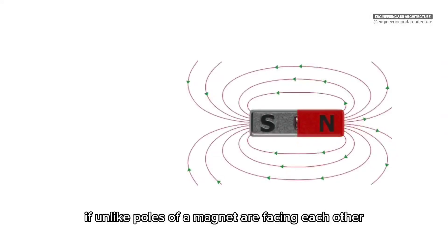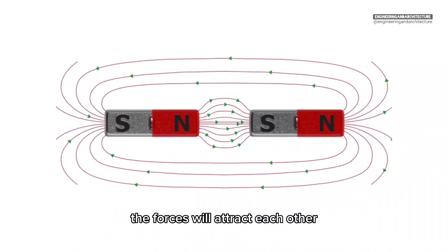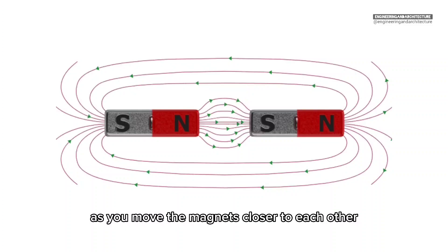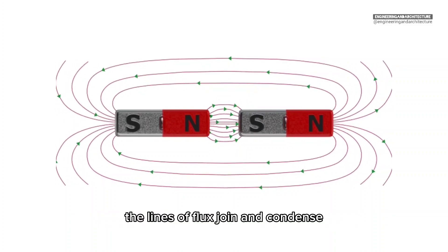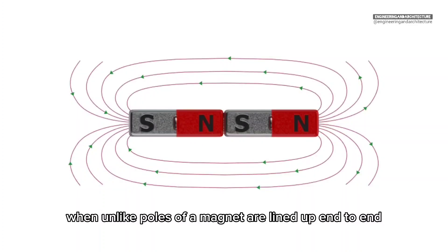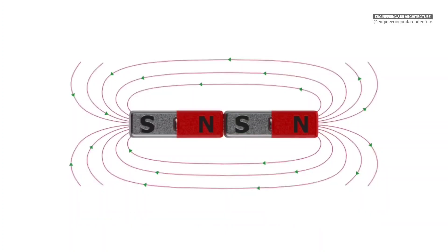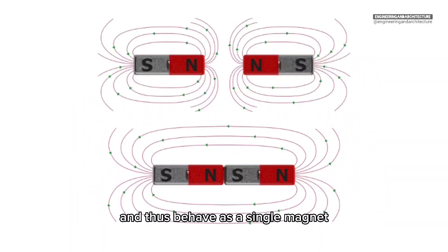If unlike poles of a magnet are facing each other, the forces will attract each other. As you move the magnets closer to each other, the lines of flux join and condense, increasing the forces of attraction. When unlike poles of a magnet are lined up end to end, their combined forces create a unified magnetic field and thus behave as a single magnet.